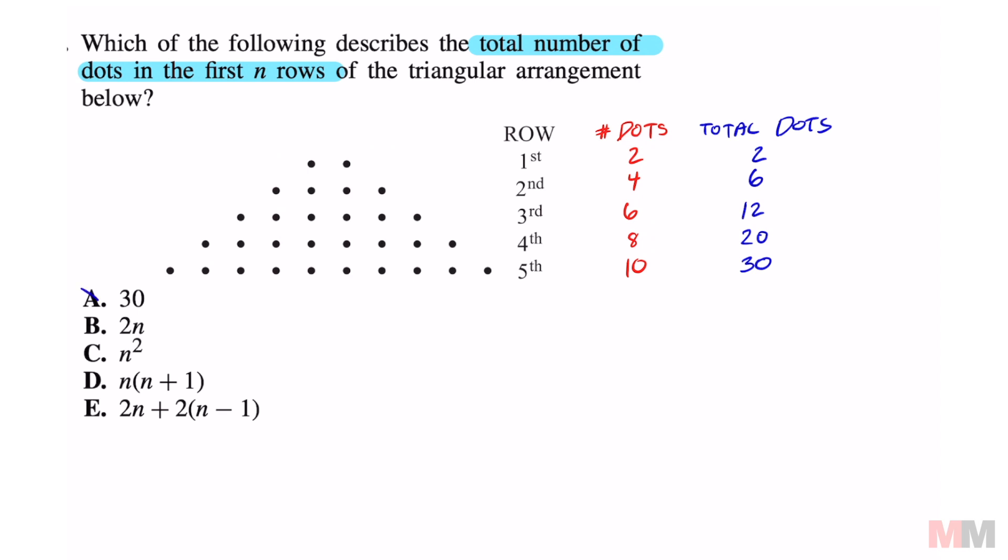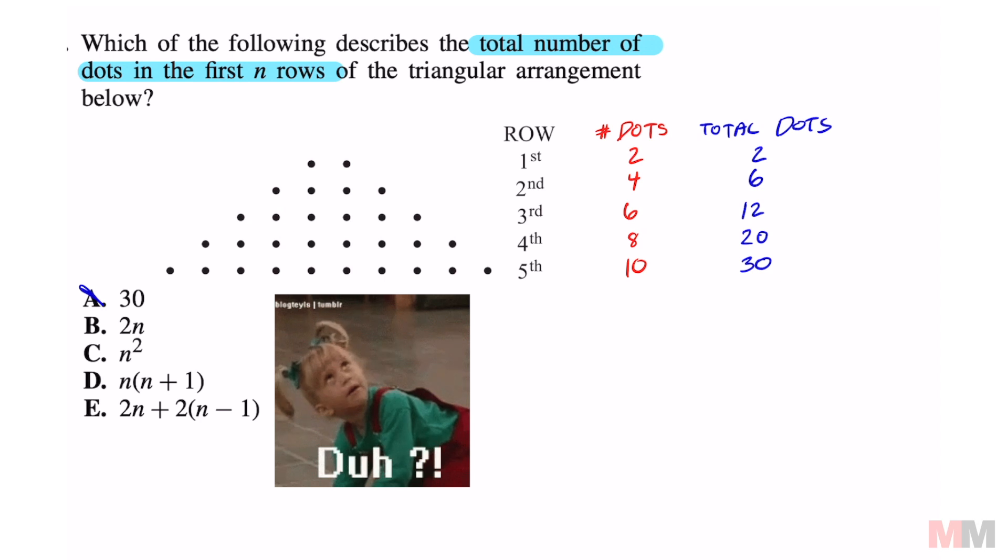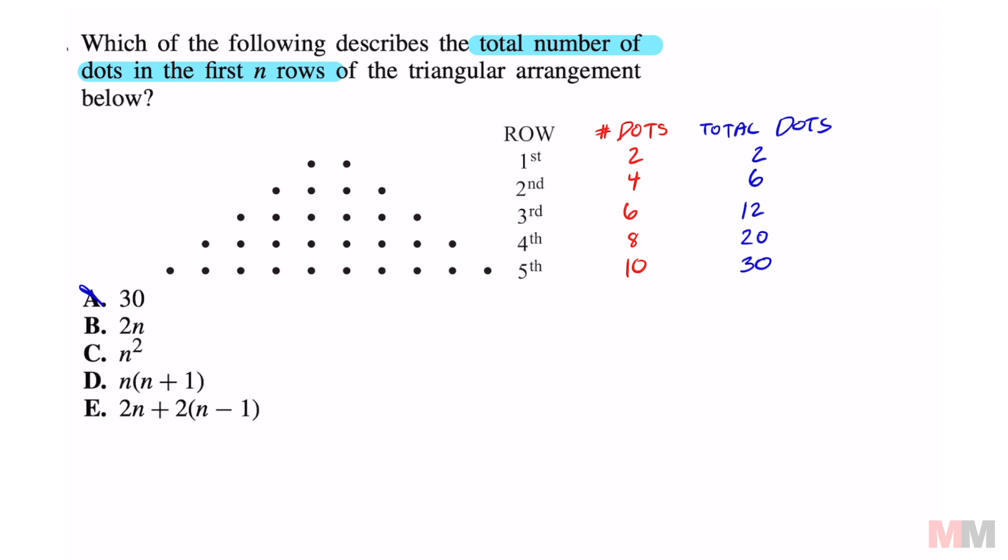A is obviously wrong. If you look at the sequence right here, finding the difference between each row, 2 to 6 is a difference of 4. That's a difference of 6. That's a difference of 8. You can see the pattern right there. It's increasing by two each time.